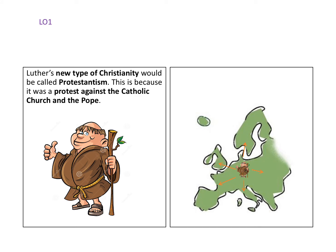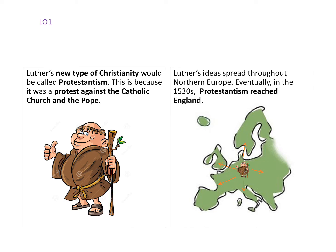Luther's new type of Christianity would be called Protestantism, because it was a protest against the Catholic Church and the Pope. Luther's ideas spread throughout Northern Europe, and eventually in the 1530s Protestantism reached England. As you can see on the map, it spread all around Europe — particularly Scandinavia, Germany, the Netherlands, and also England.